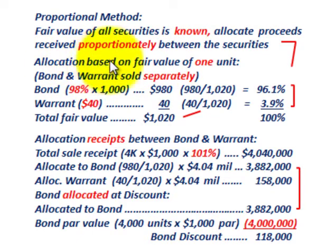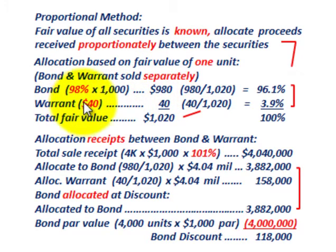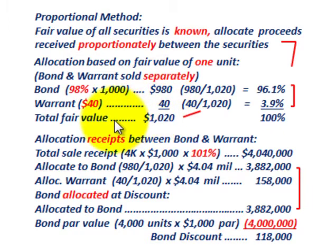The allocation is based on the fair value of one unit — one bond and one detachable stock warrant attached to it. We look at the bond and warrant sold separately based on their separate selling prices. The bond was selling separately at 98% of $1,000 par value, so one bond is worth $980. One warrant was given a market price of $40, so the warrant value is $40. Total fair value of one unit is $980 plus $40, giving us $1,020.